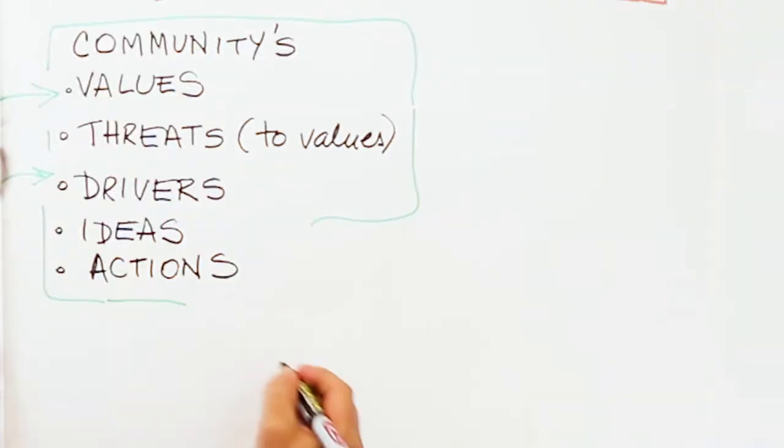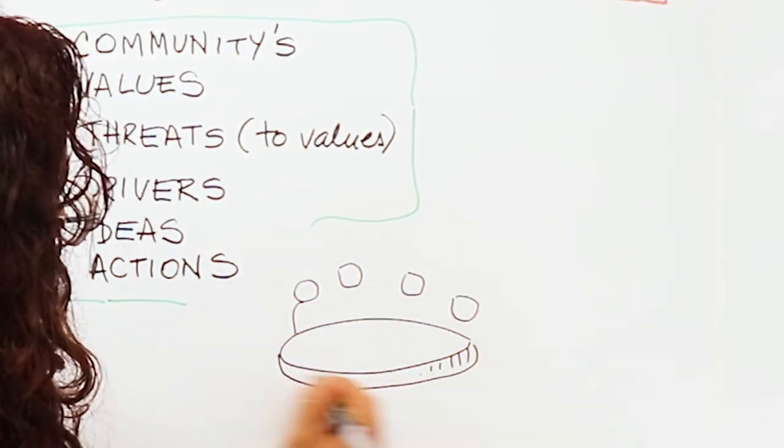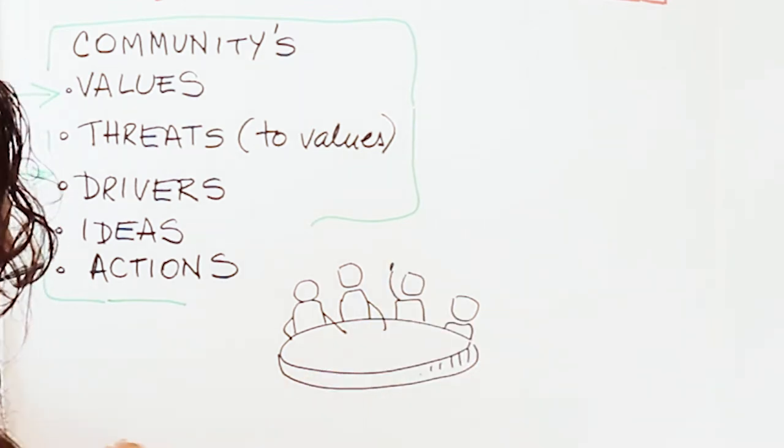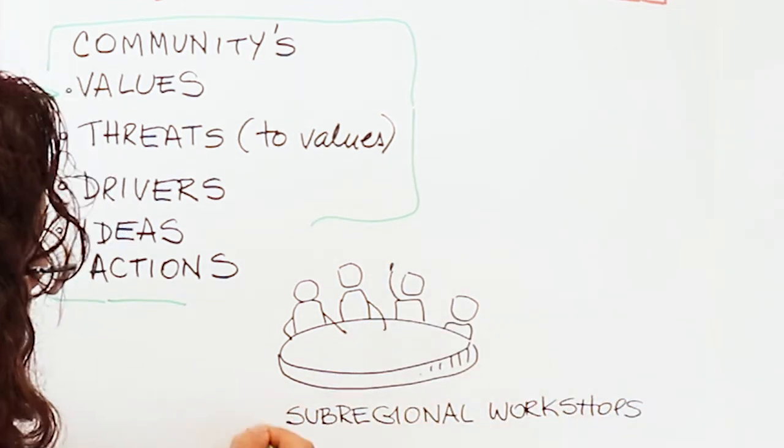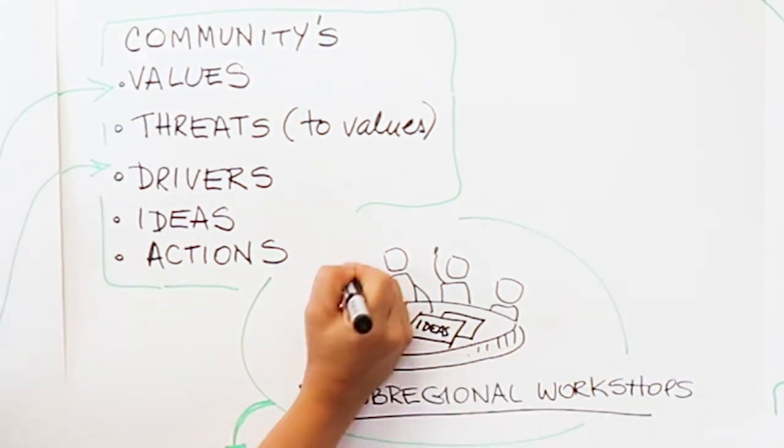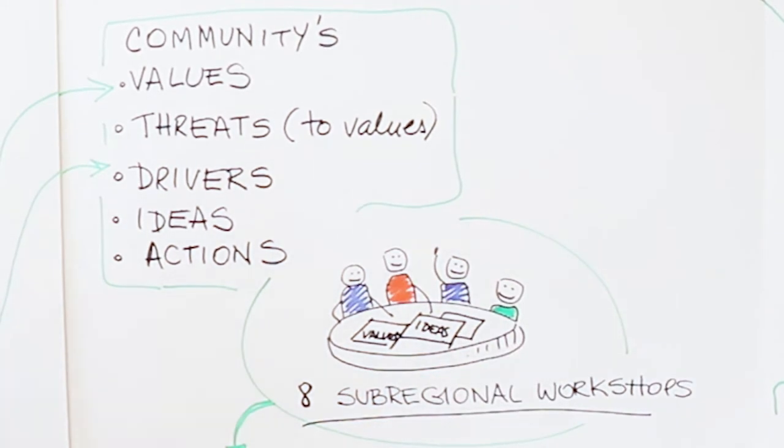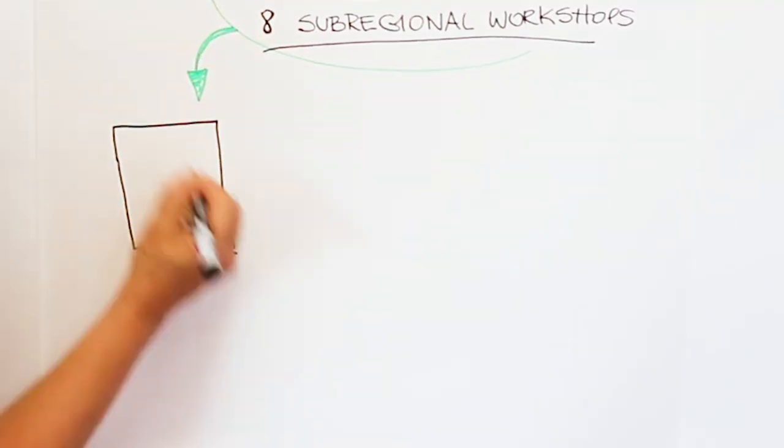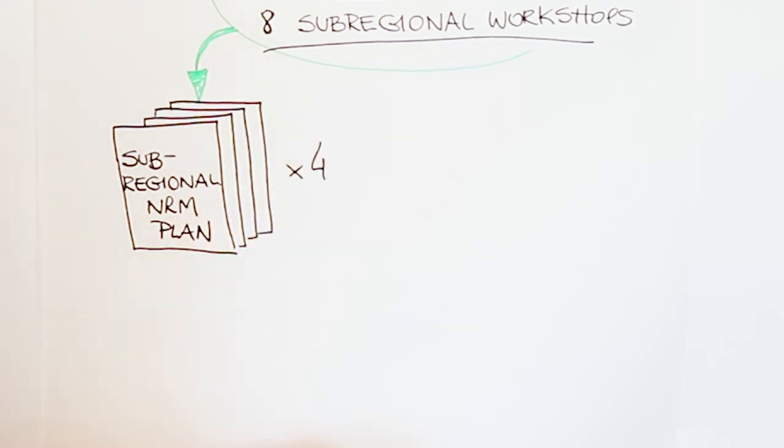We've got four sub-regions in the South East and we've taken all of this information into discussions at eight community workshops to develop sub-regional NRM plans. The community developed a vision for what they want the landscapes to look like in the future and what actions we need to get there.